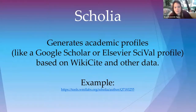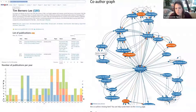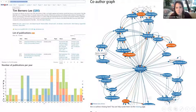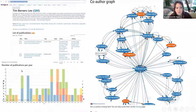Another important example is Scholia, developed by Wikimedians including Finn and Daniel Mietchen, which allows us to explore researchers, research institutions, and research topics in a completely new and visual way — almost like Google Scholar. There's a live bubble chart showing interactions — here I used the example of Tim Berners-Lee and the people he worked with. His list of publications, publications per year and per topic — all of this is auto-generated by Wikidata queries, live and completely up to date.